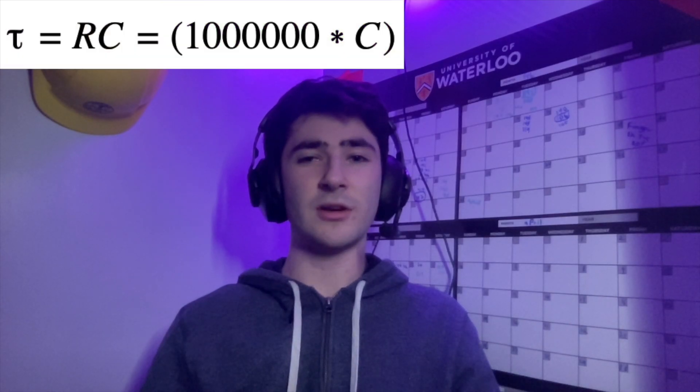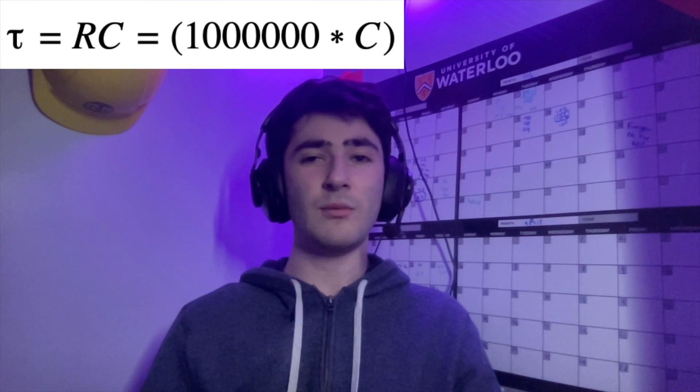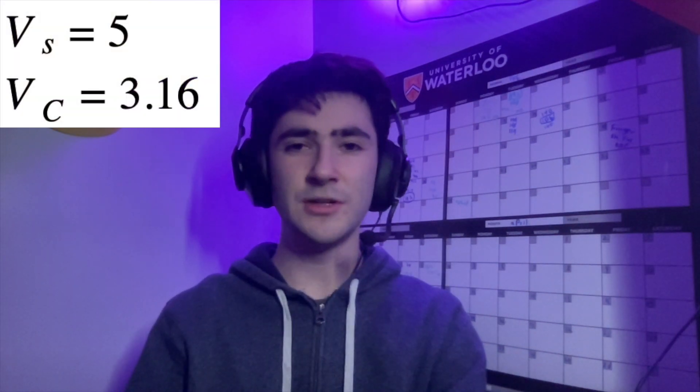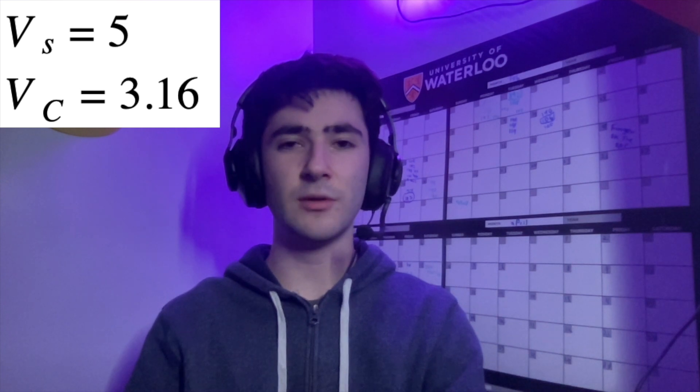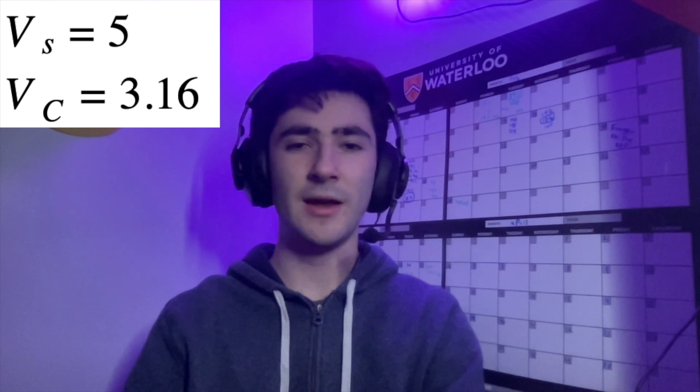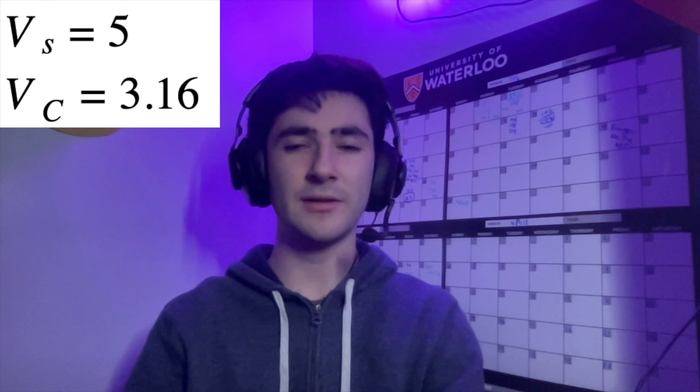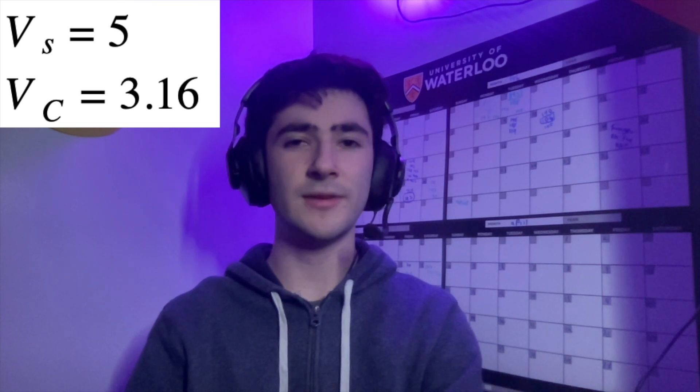According to the time constant equation, the resistance of the resistor is 1 megaohm, and we don't know the capacitance because it keeps changing, so we would keep that as a separate variable. As mentioned earlier, because the Arduino outputs 5 volts, the capacitor can only charge to a max of 5 volts, and at one time constant, the capacitor charges to 3.16 volts.